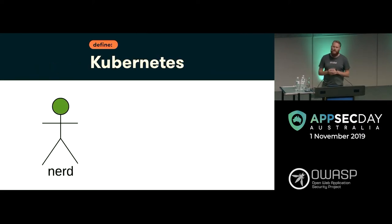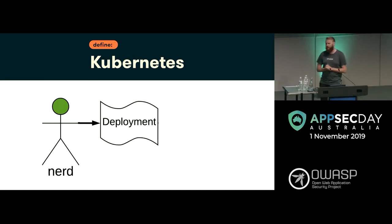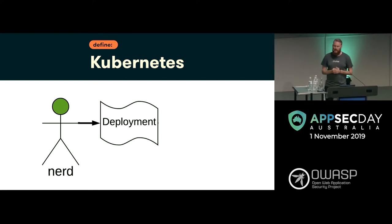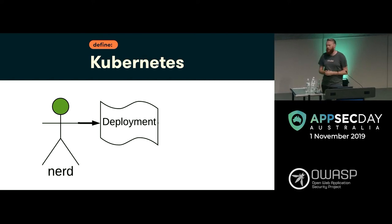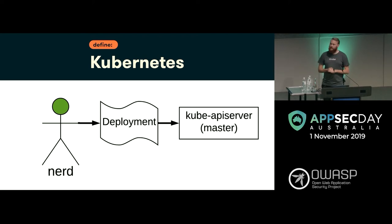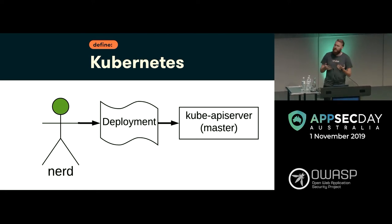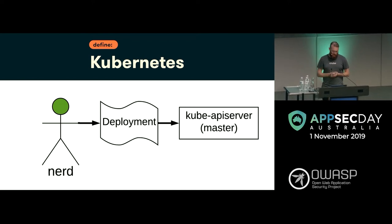First principles. Here we have a nerd who would like to deploy something, so they make a deployment. This deployment is typically a YAML file with some extra metadata around the thing they want to deploy — the particular container image, how many of them they want, how they want it configured. They pass that along to the API server, and then the API server goes and makes things happen. That's typically the stopping point for most developers — they just send it to the API server and make stuff happen.